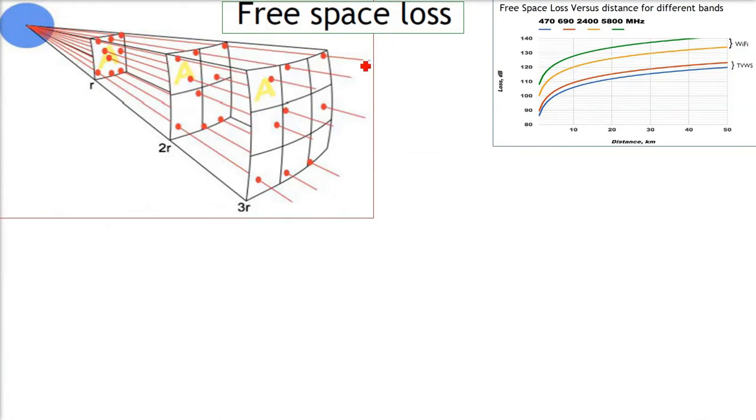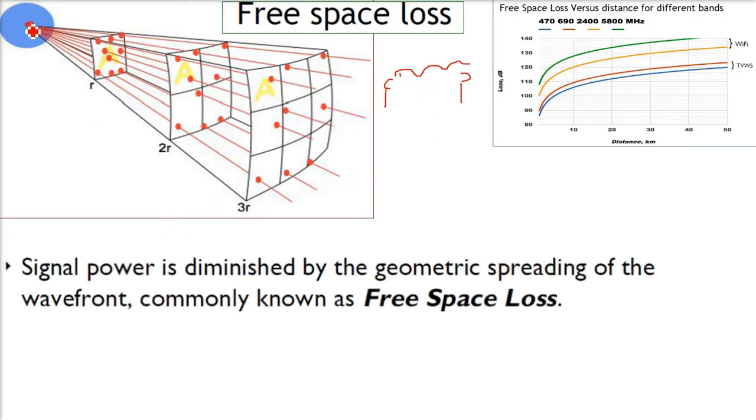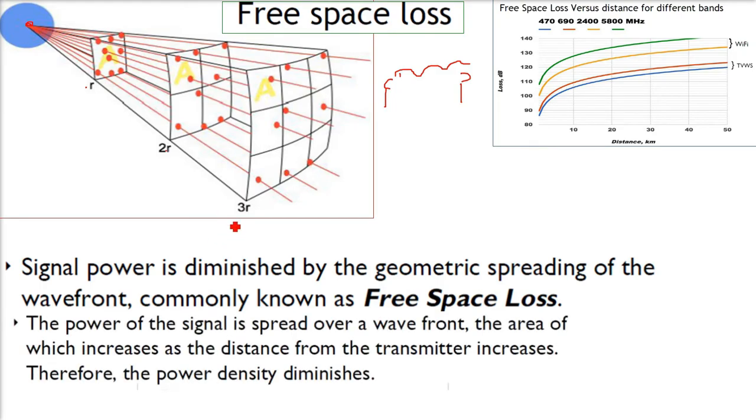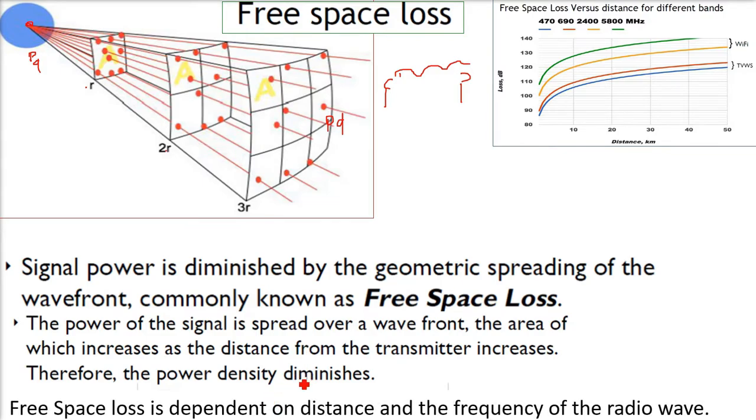Before we go to the actual link budget, let me tell you about free space loss. When we're doing wireless communication, signal power is diminished or attenuated by the geometric spreading of the wavefront. This is free space loss. The power is spread over a wavefront whose area increases as distance from the transmitter increases. Therefore, power density diminishes. Free space loss is dependent on the distance and frequency of the radio wave.